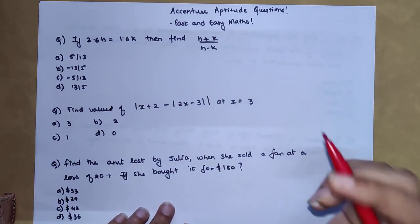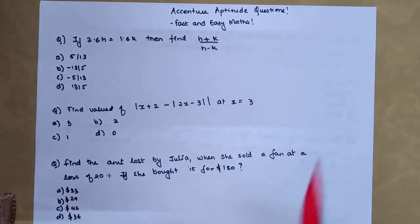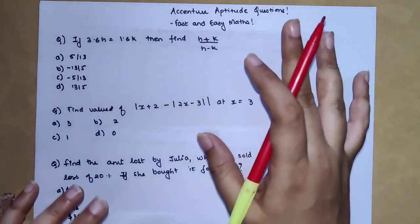Welcome everyone. Today we are going to solve Accenture aptitude questions which were asked last year. Basically, all these multinational companies have certain tests which you need to pass and certain rounds of interviews. Once you clear all of that, then you can get a job.